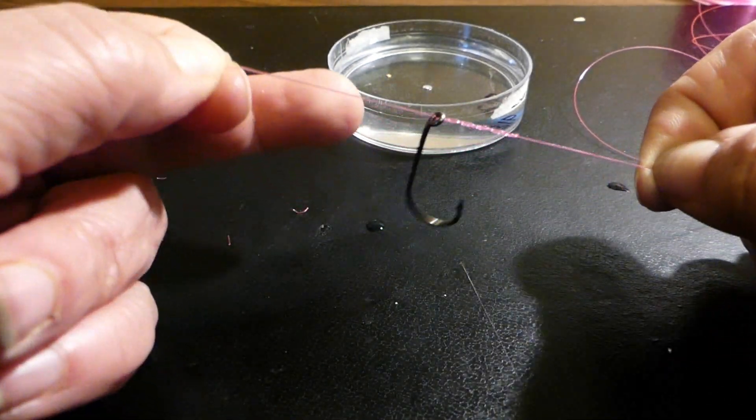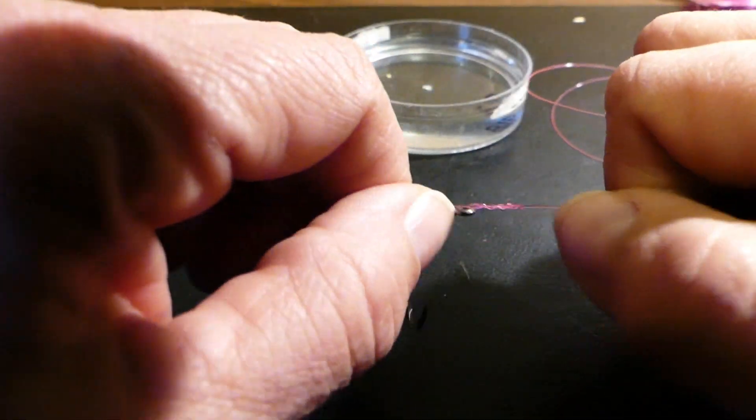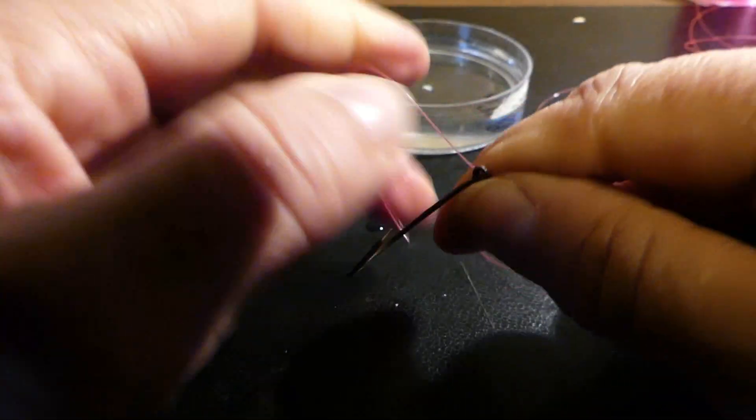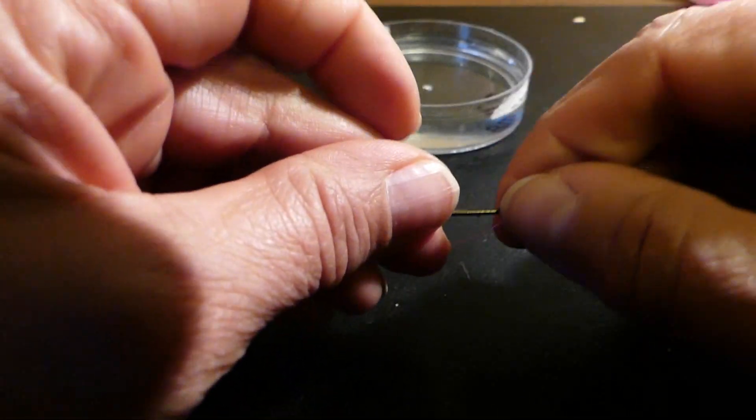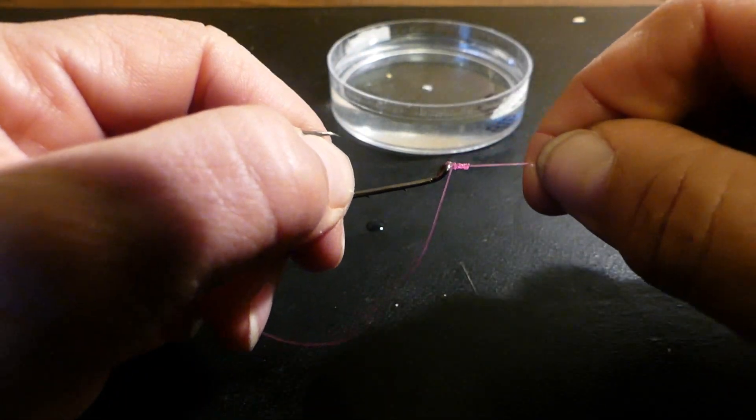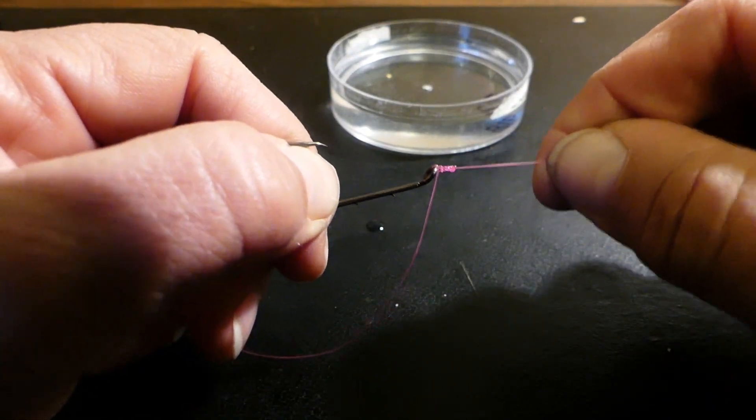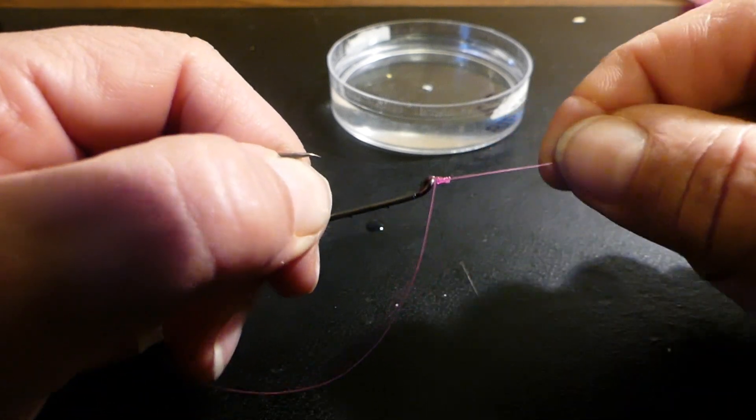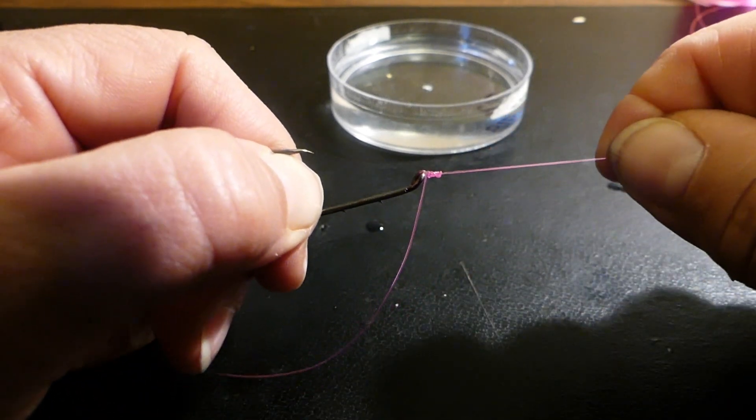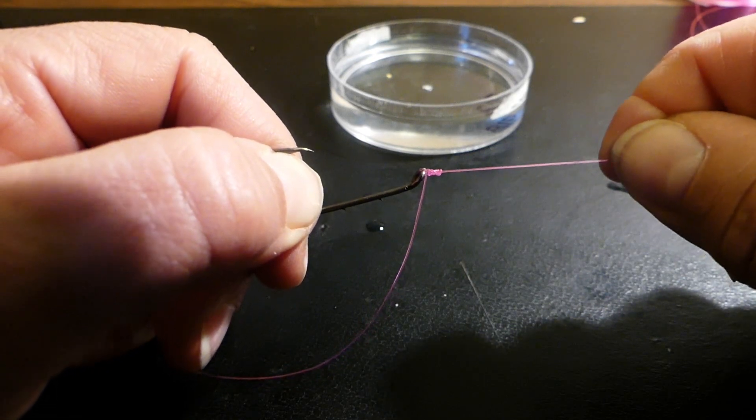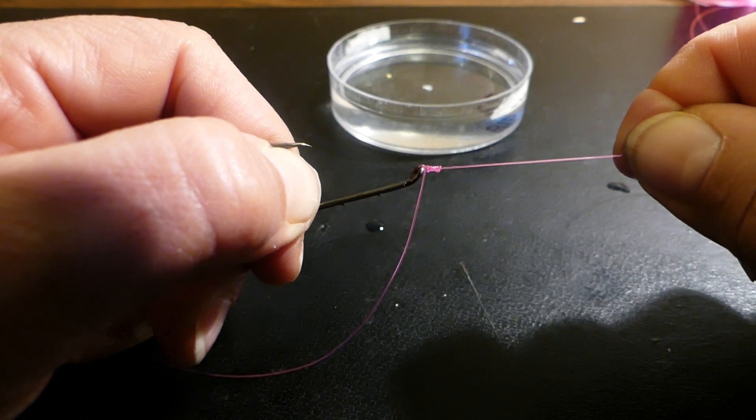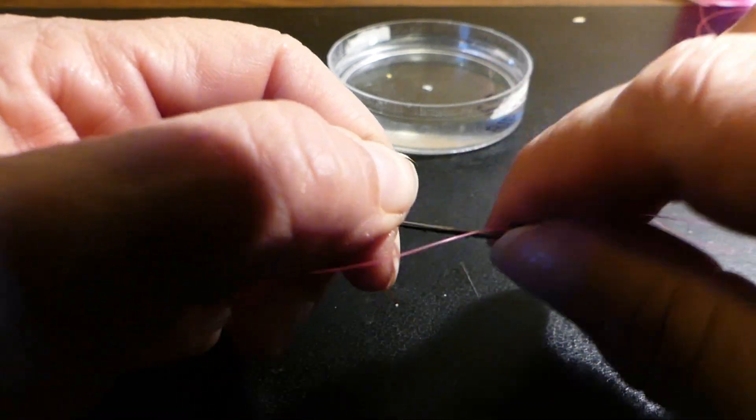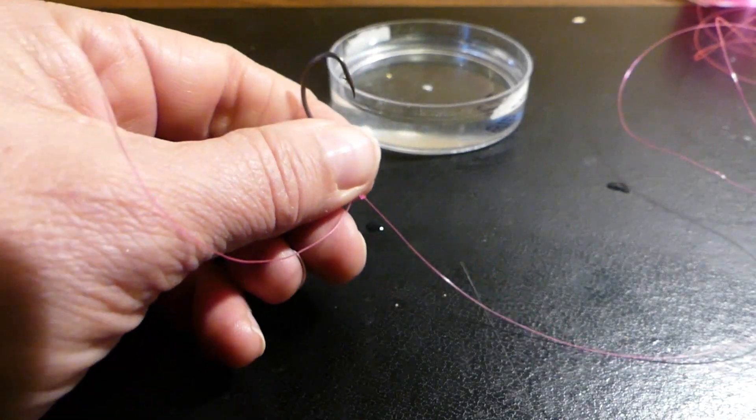We've moistened the line. We're now going to pull the tag in and the main line to cinch down on that knot. Bring it right down to the loop of the eye of the hook. Then we're just going to pull on that and hold it for about 10 seconds. This allows the loops of this knot to bed into the main line, so they dig in. We want them to do that. About 10 seconds should do nicely.